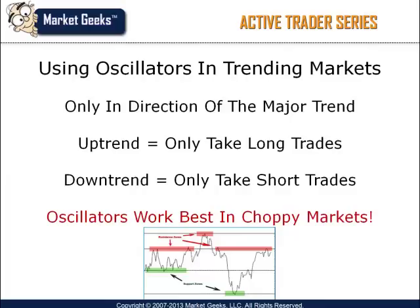If the market is trending higher, I would only take trades using the RSI indicator in the long direction. And if the market is trending downwards, I would only recommend taking trades that are going short. The best use for an oscillator such as the RSI indicator is to measure short-term overbought and oversold levels in choppy markets — this is where this indicator thrives.